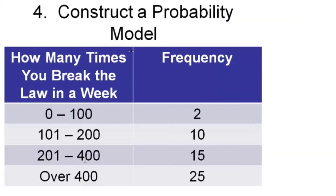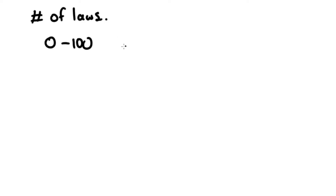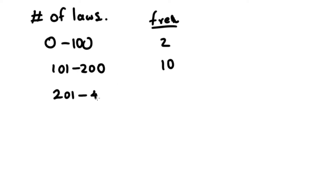Construct a probability model: how many times you break the law in a week. The ranges and frequencies are: 0 to 100 — 2 times; 101 to 200 — 10 times; 201 to 400 — 15 times; over 400 — 25 times. Adding all frequencies together gives a total of 52.